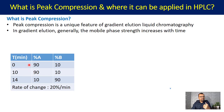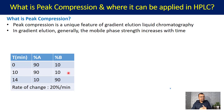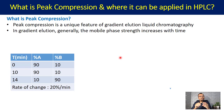Looking at this gradient program, from 0 to 10 minutes it is isocratic, and after 10 minutes until 14 minutes it is a gradient run. At 10 minutes it is 90% A, and at 14 minutes it is 10% A. So the proportion of the weaker diluent, which is aqueous, is getting reduced, while the percentage of the stronger diluent — acetonitrile or methanol — is getting increased from 10% to 90%. In a gradient run, the strength of the mobile phase increases.